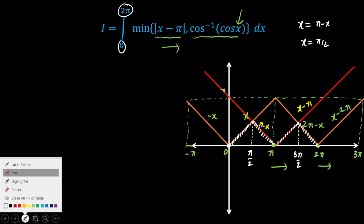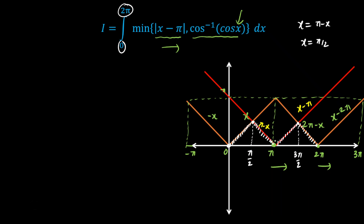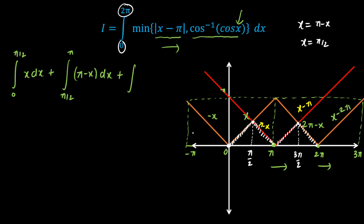Now we can easily integrate the function. We divide it into four parts. The first part is the integral from 0 to π/2 of x dx. The second is from π/2 to π of (π - x) dx. The third is from π to 3π/2 of (x - π) dx. And the last is from 3π/2 to 2π of (2π - x) dx.